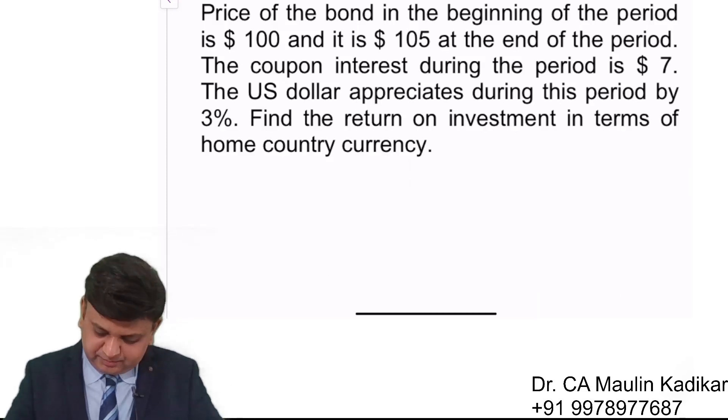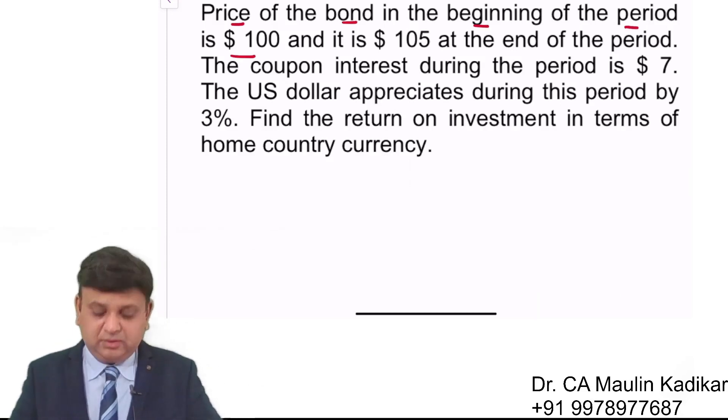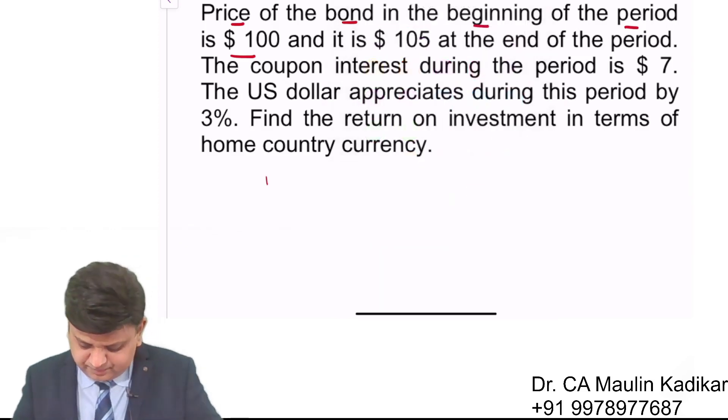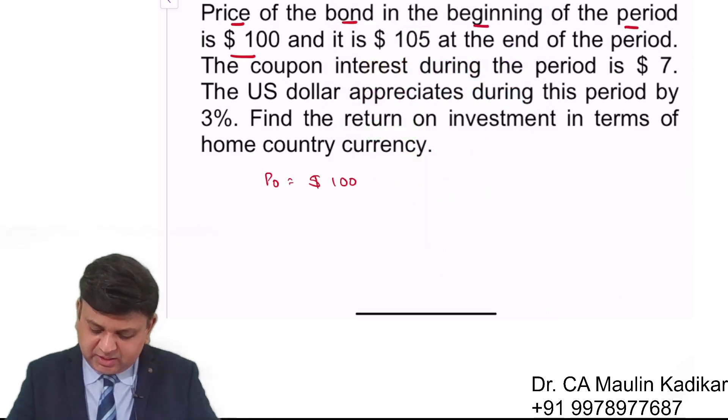Let us see the next question. The price of bond in the beginning of the period is $100. P0 is $100 and it is $105 at the end of the period.